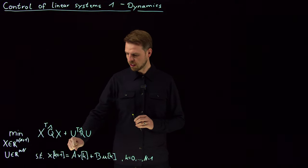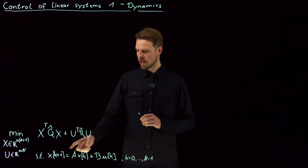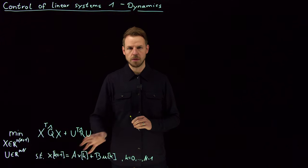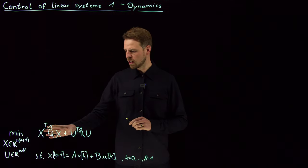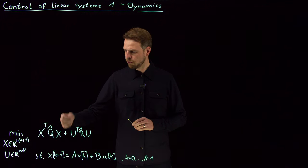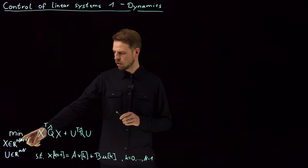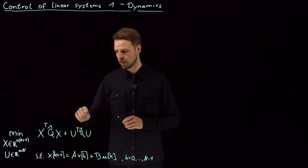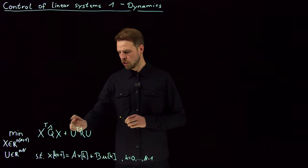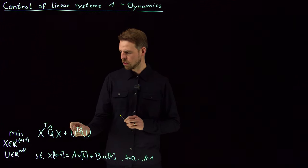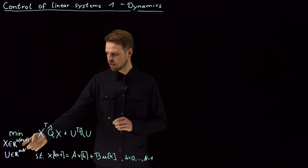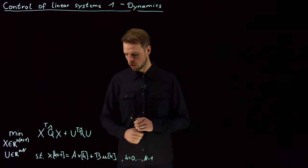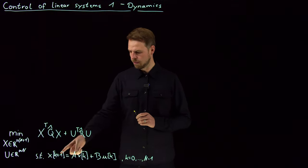In a discrete time setting, what we get is n of these constraints, meaning that in every time step the evolution of the system state is given by the dynamics. We finished the last video by rephrasing the state into a very large vector of dimension n times (N+1), which is the number of time steps. Similarly, u became a very large vector of dimension m times n time steps, because we only need control inputs from 0 to N minus 1, whereas we have states from 0 to N.